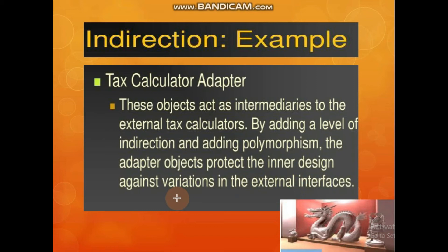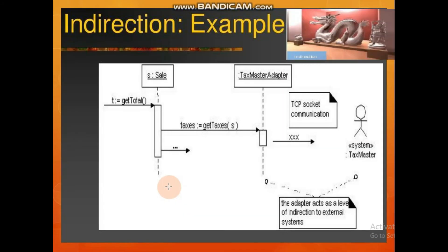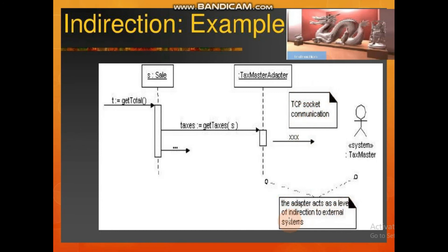For example, here we have a Sale object. A message is sent, then a message goes to the TaxMaster Adapter. One of the intermediaries used here is TCP socket communication. The adapter acts as a level of indirection to the external system, TaxMaster.